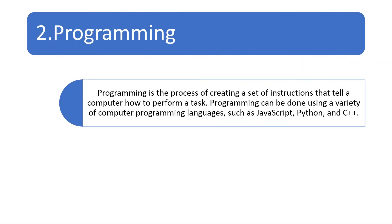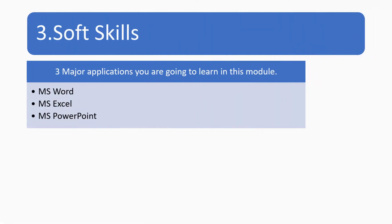Next, what is programming? Programming is the process of creating a set of instructions that tell a computer how to perform a task. Programming can be done using a variety of computer programming languages, such as JavaScript, Python, and C++. You will also be learning three major applications in this module: MS Word, MS Excel, and MS PowerPoint.